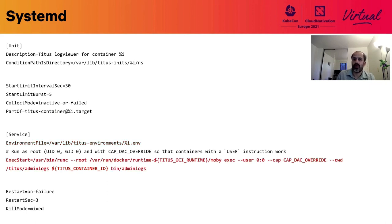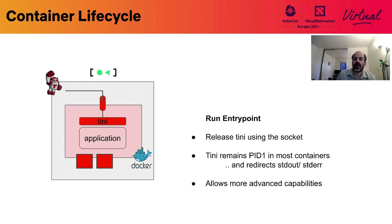The information about which container to join is passed in files on the host by the Titus executor. Finally, we simply use runc to launch a process running inside the container. Now the service is running in the namespace and cgroup of the container, which means the kernel will reap the service when the container dies. Once the sidecars are running, we release tini using the socket and it runs the entry point as a child.